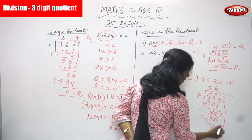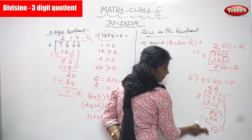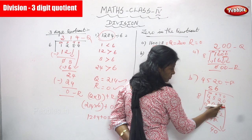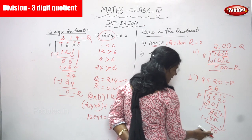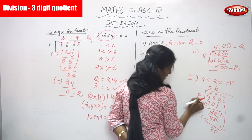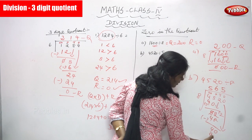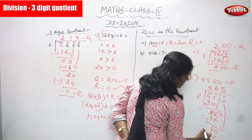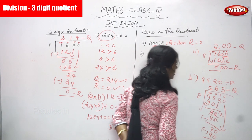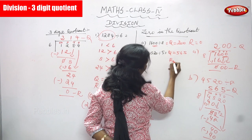Bring down the ones place value 0, giving 40. Compare 4 and 8: 4 is less than 8, so bring down 0 to get 40. In 40, 8 goes 5 times — 8 fives are 40. Write 5 in the quotient place. Write 40 below: 40 minus 40 equals zero. Remainder is 0 and quotient is 565.